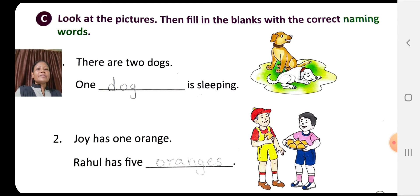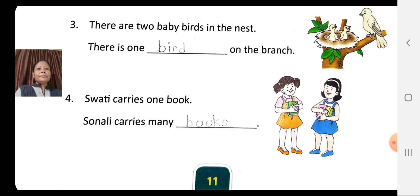Number two: Joy has one orange. Look at the picture — one means singular noun. Rahul has five oranges. Look at the picture — five oranges is plural. In the blank you have to write 'oranges'.